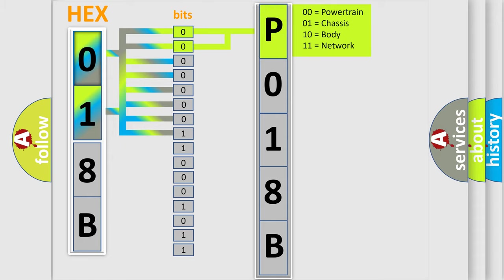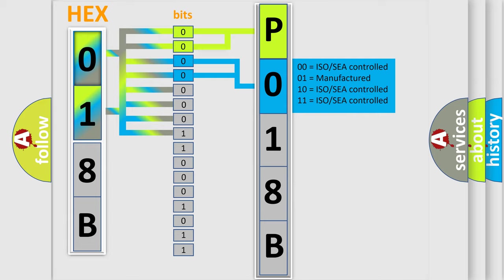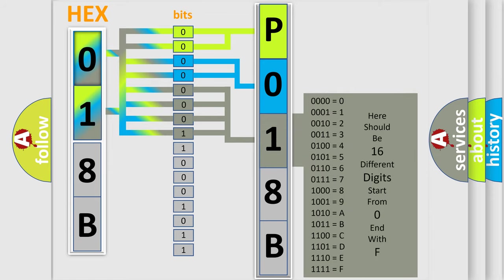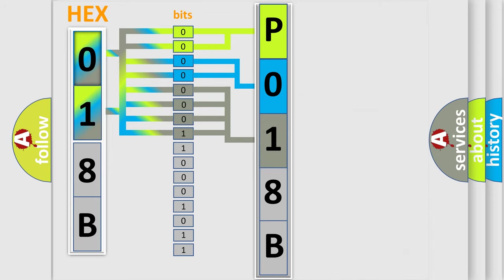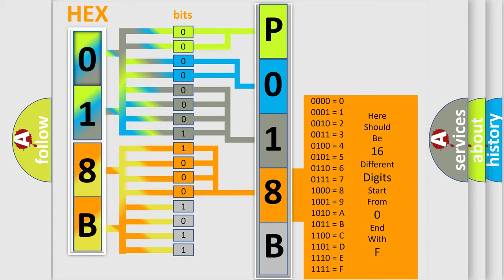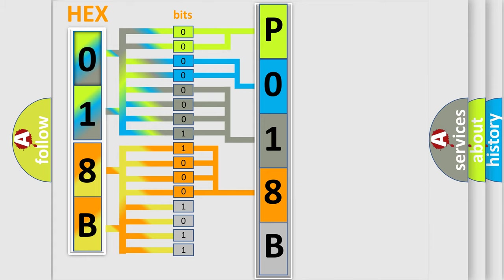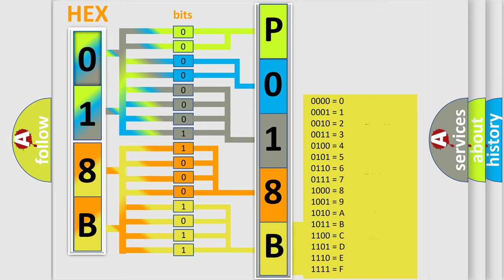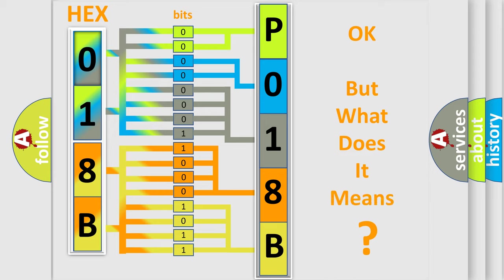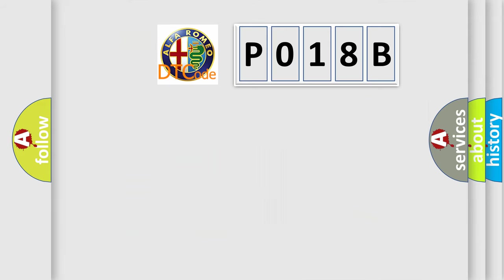By combining the first two bits, the basic character of the error code is expressed. The next two bits determine the second character. The last bits of the first byte define the third character of the code. The second byte is composed of eight bits — the first four bits determine the fourth character, and the last four bits define the fifth character. A single byte conceals 256 possible combinations. This is how the diagnostic tool translates received information into a more comprehensible format.